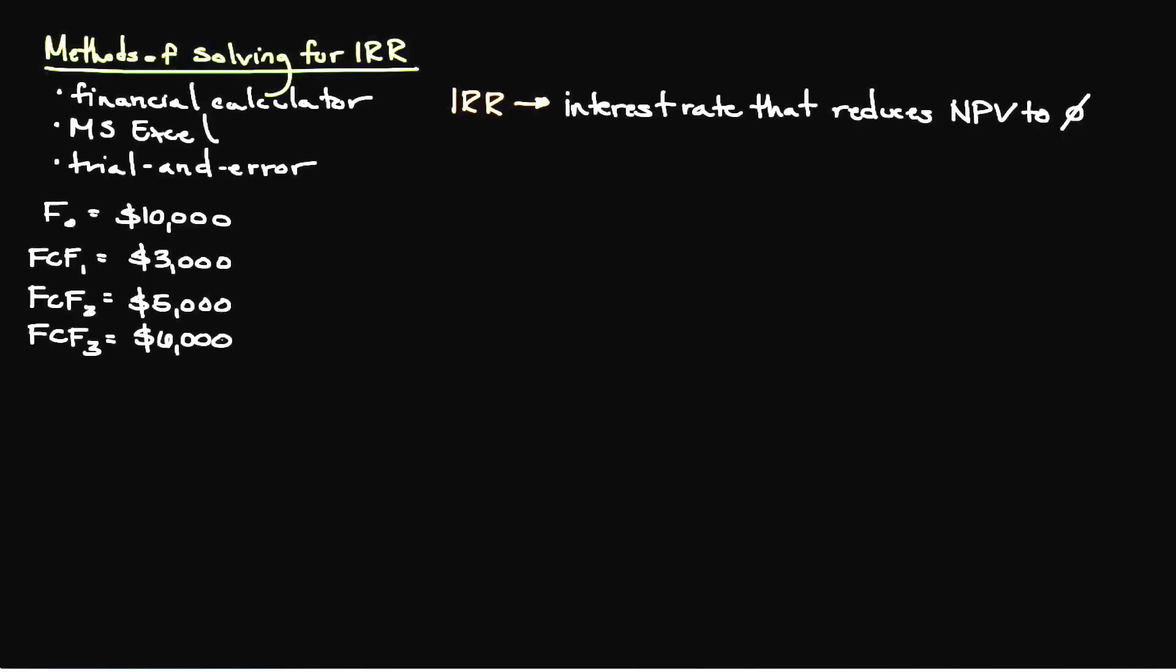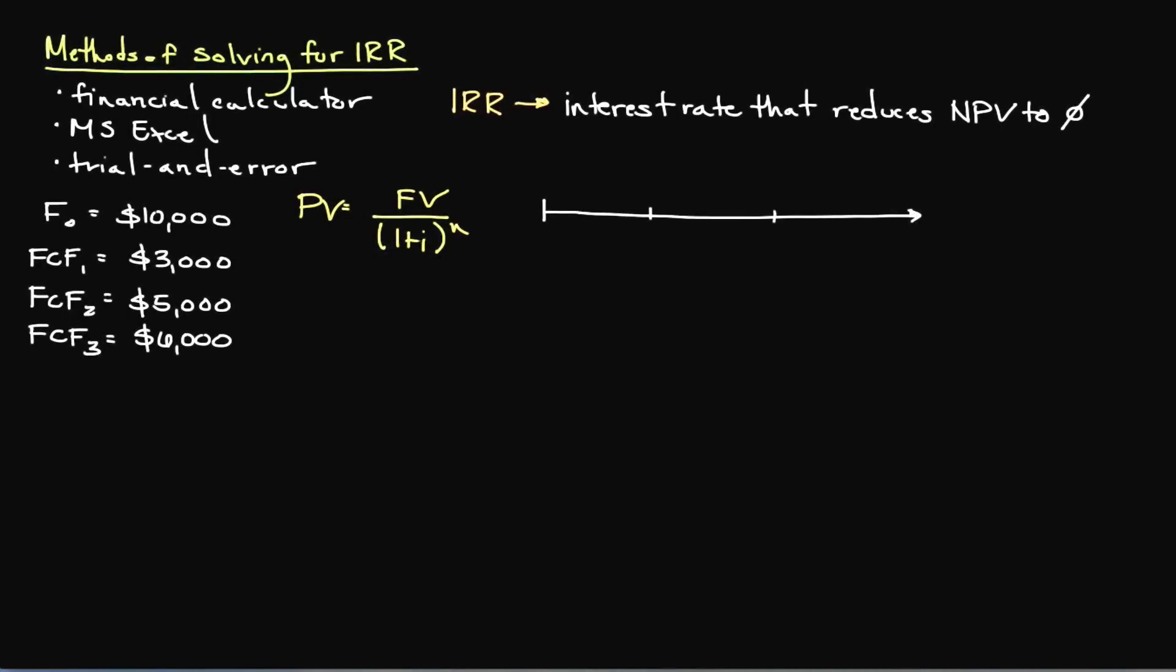We need to solve for IRR, which is unknown. Using the present value equation, we need to discount our future cash flows to the present time, and then subtract the total value of them from our initial investment to determine the net present value. Before we solve for the present value of these cash flows, we need to select an interest rate to discount them by. This is just a guess, and I'm going to use 5%.